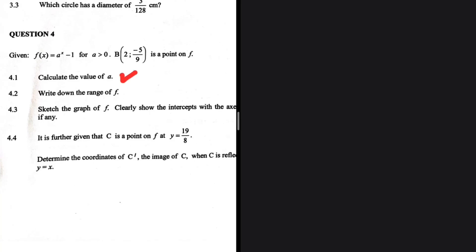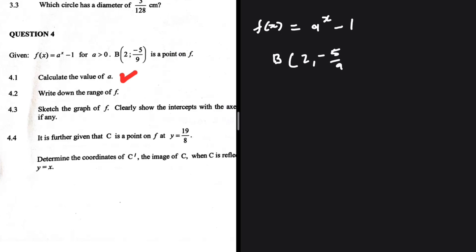We need to calculate the value of a when we are given a function. f(x) is equals to a to the power x minus 1, and we are given a point B which lies on f(x): x = 2 and y = -5/9. It's easy to see what we need to do — in place of x we substitute 2, in place of y we substitute -5/9. So we have -5/9 equals a to the power 2, minus 1, meaning a squared equals -5/9 plus 1.